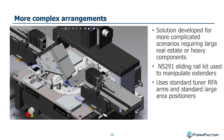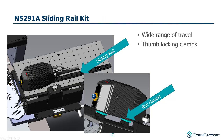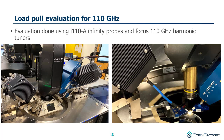Some customers need more complex arrangements where the real estate on our normal RF platform is not viewed as sufficient. For these cases we use large area positioners with conventional angled RFA arms as standard, and we have the ability to move the frequency extender on sliding rails, which aids the calibration process by allowing us to slide the extenders towards each other to get the cable ends close to one another.